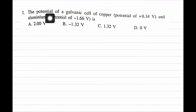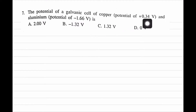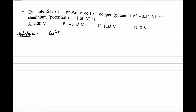Let's solve question number 7. The potential of a galvanic cell of copper and aluminium is to be found. The SRP values are given: copper is +0.34 volt and aluminium is −1.66 volt. The SRP of copper is Cu²⁺ + 2e⁻ → Cu at +0.34 V, and for aluminium, Al³⁺ + 3e⁻ → Al at −1.66 volt.